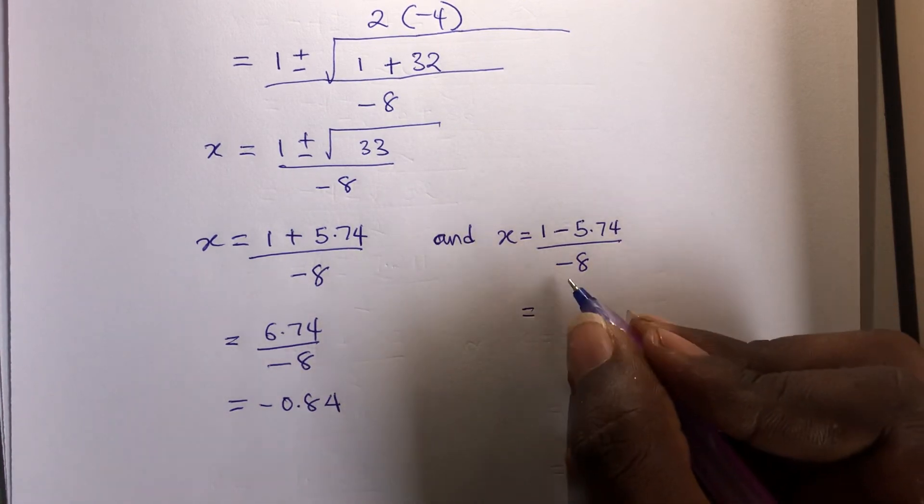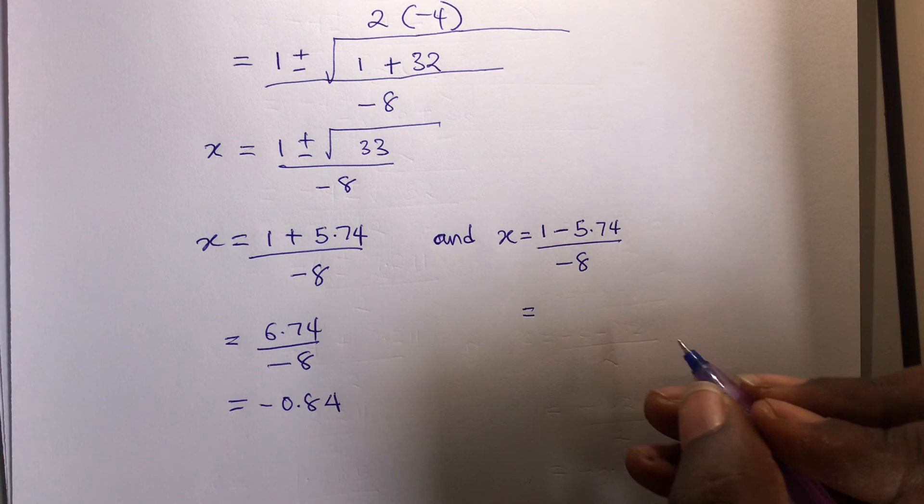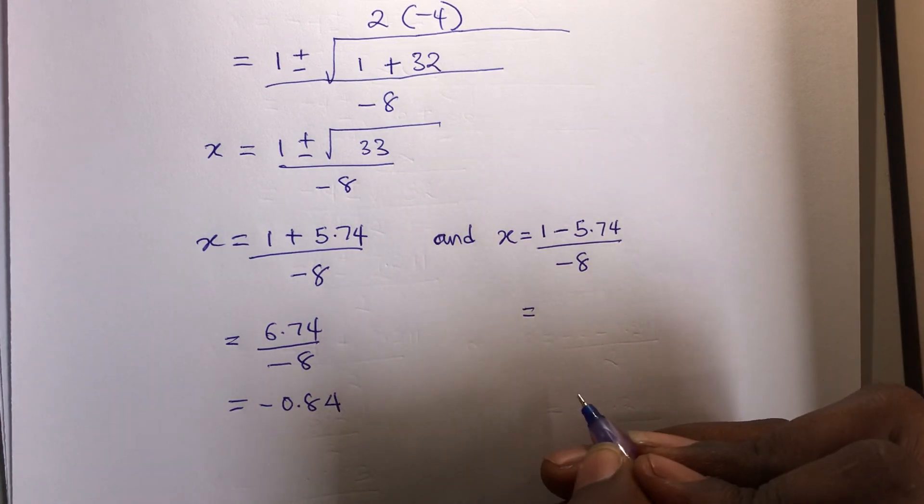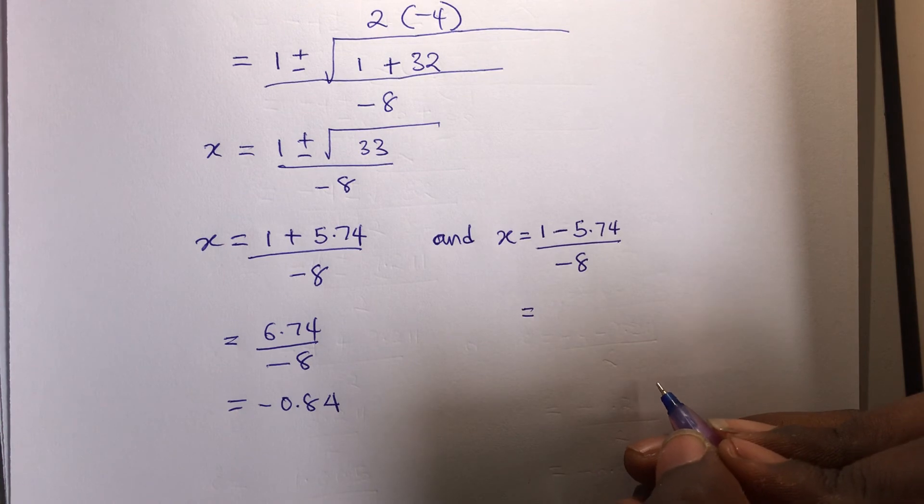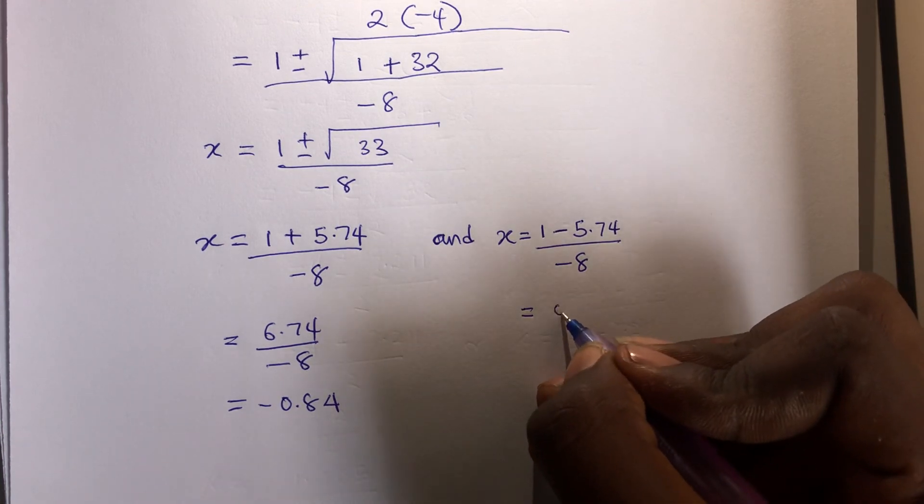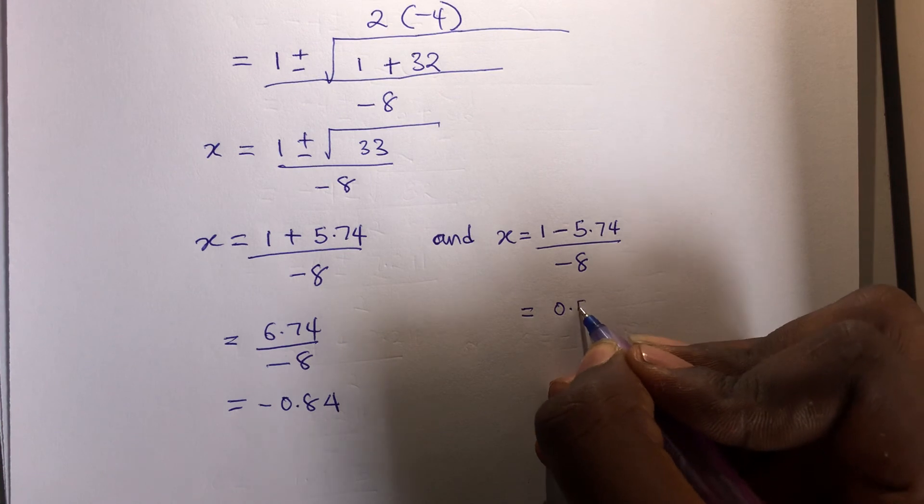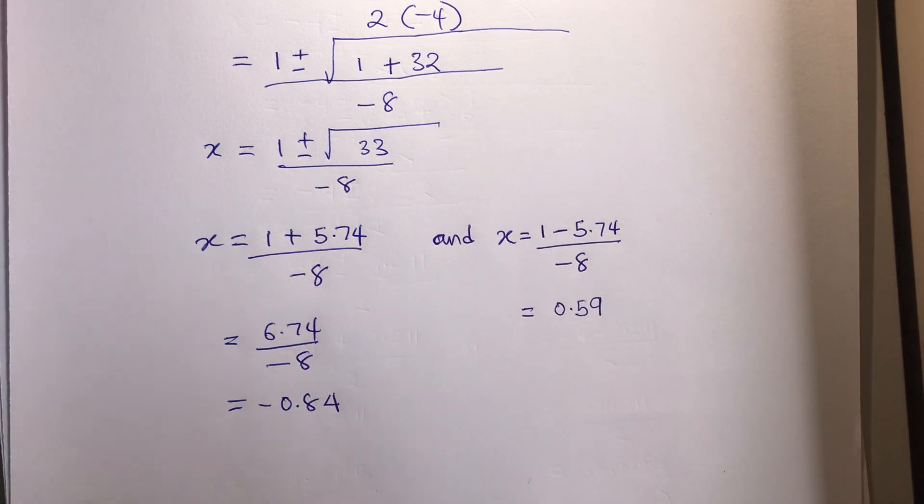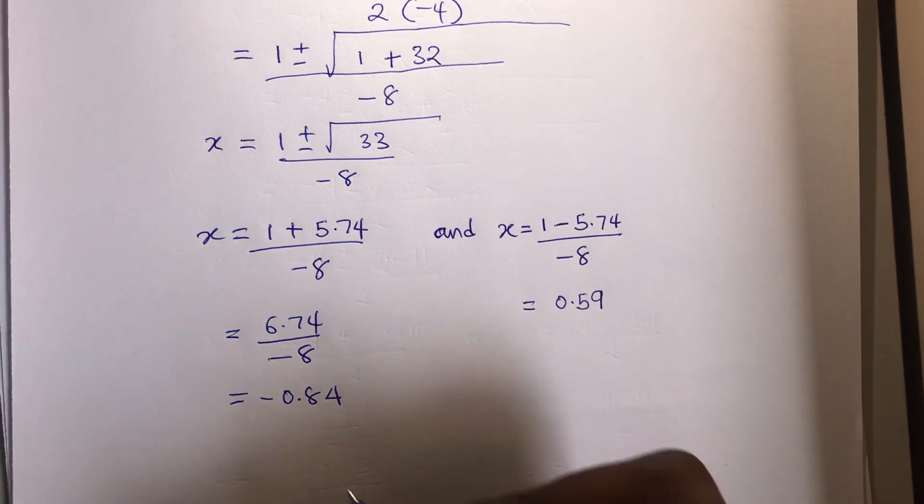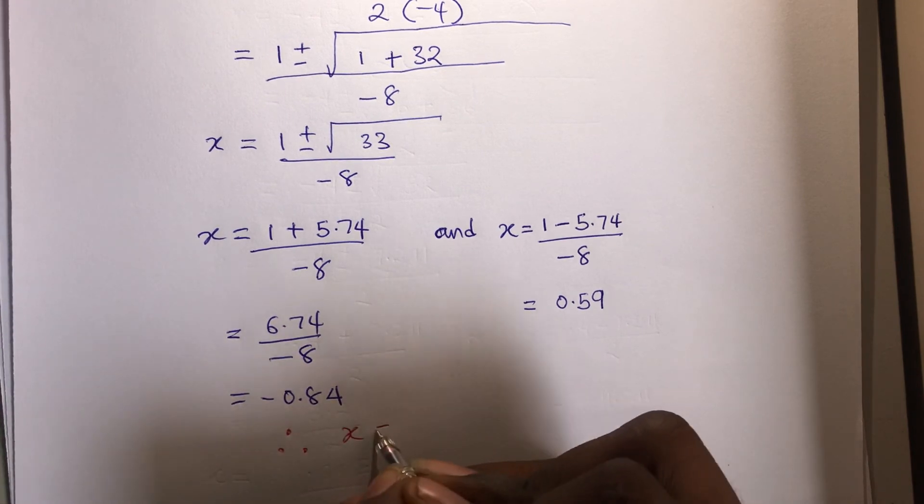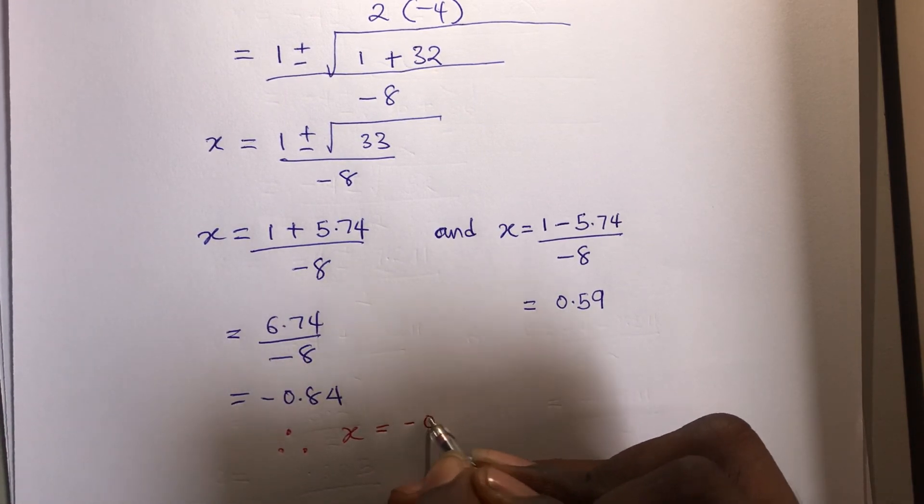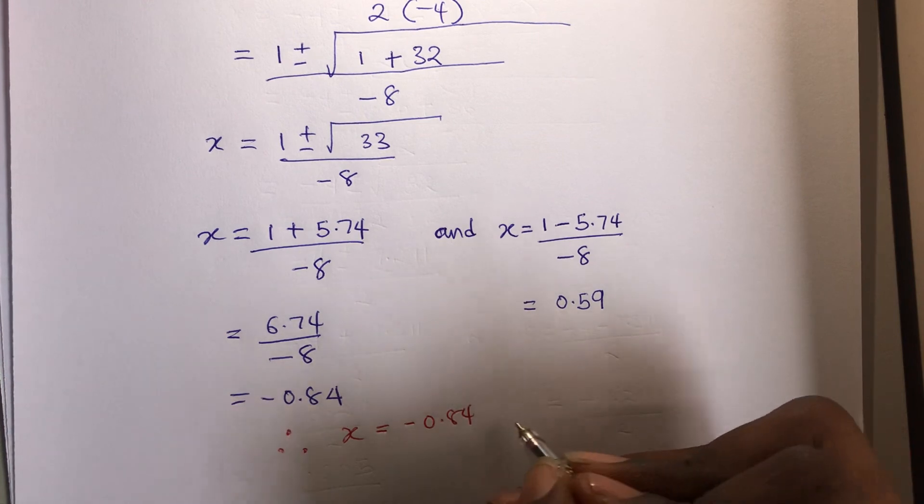Here, this one: 1 minus 5.74 is minus 4.74 over minus 8 gives you 0.59. Values for x, therefore, x is equal to, I like to write my negative numbers first, minus 0.84 and 0.59.